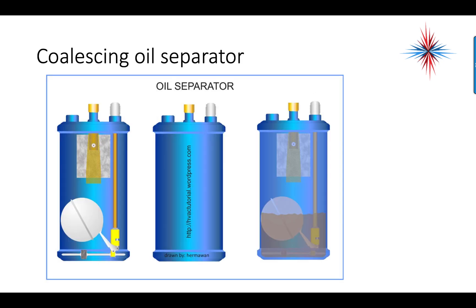Here is an example of a coalescing oil separator. The oil comes in, flows through a filter, and then drops down to the bottom. As the float switch rises, it opens the line back to the suction line or the low side of the system. The high pressure on the high side of the system forces that oil back to the low side.